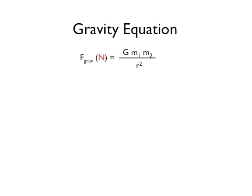Newton's equation says that the force between two objects is determined by multiplying the mass of one object by the mass of a second object and dividing by the distance between them squared. And all this is times a gravitational constant, G.